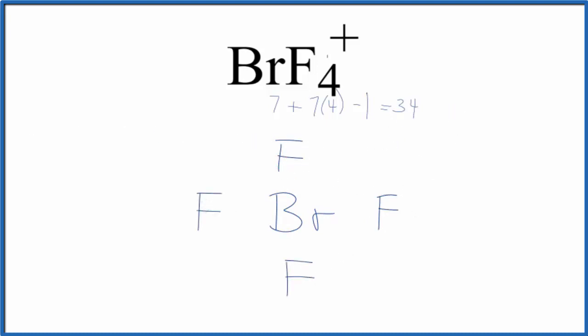We have 34 total valence electrons. We'll put a pair of electrons between each of the two atoms here to form chemical bonds. So at this point, we'll have used 8 valence electrons.